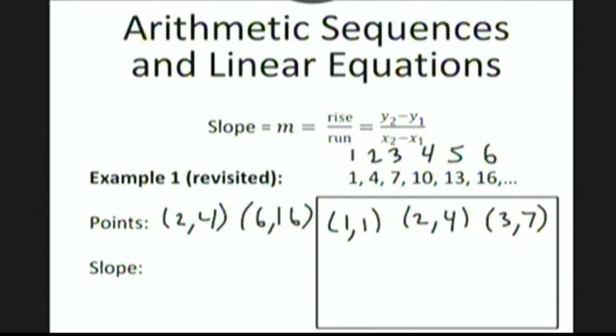The slope of the line passing through these two points is 16 minus 4 over 6 minus 2, which is 12 over 4, or 3. Does that number look familiar? It should because it's just the common difference of the arithmetic sequence. So in other words, we can find the common difference of an arithmetic sequence by just computing the slope of a line passing through two points as I just did.